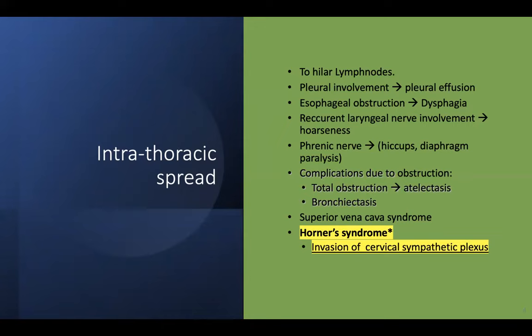Superior vena cava syndrome is due to the impingement of the superior vena cava, and is commonly seen in association with small cell carcinomas. This gives rise to increased JVP, increased jugular venous pressure, and distension of upper extremity veins. Horner's syndrome is classically seen in association with Pancoast tumor, where there is invasion of the cervical sympathetic plexus.